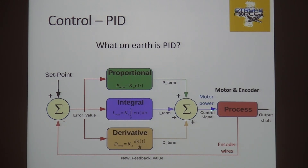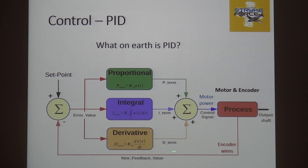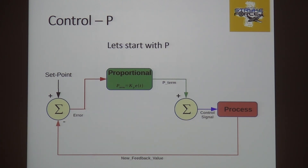Motor power goes in, that's the output shaft; encoder wires go back — that's the motor, encoder, mechanism, and all the stuff out there. That is the wire coming from the controller and the wire going back into it. The RoboRIO tells the controller how fast to go.